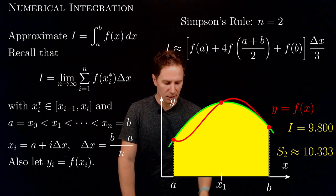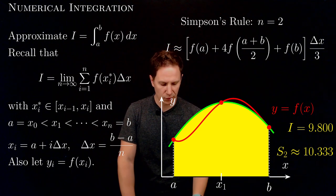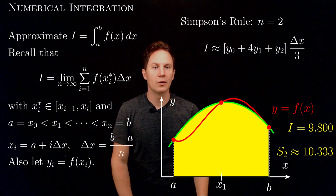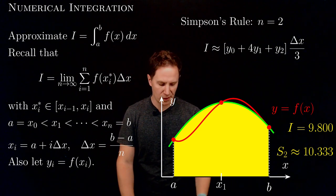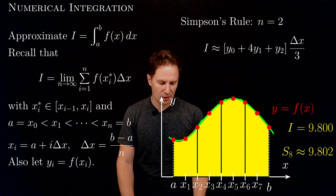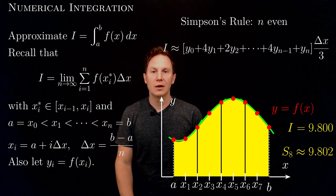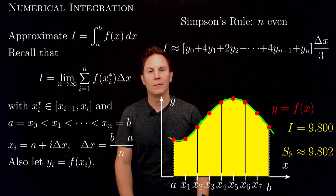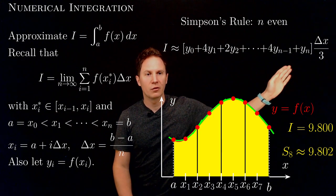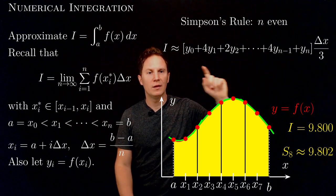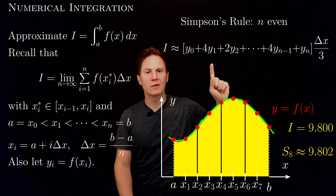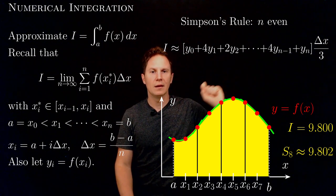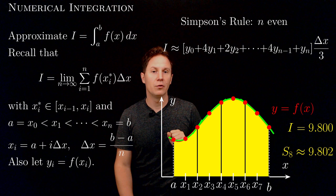This expression can be written in terms of the y values as a simple-looking expression. When we apply this to more and more subintervals — the number of which needs to be even — the approximation gets better and better. For a general even number of subintervals n, this is Simpson's rule formula: delta x over 3 multiplying the sum where the endpoint values at a and b have a multiplier of 1, the odd-indexed in-between values get a multiplier of 4, and the even-indexed in-between values get a multiplier of 2.